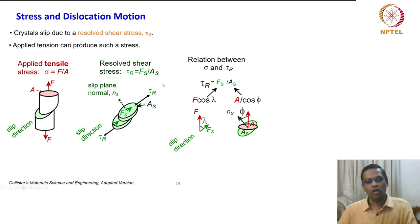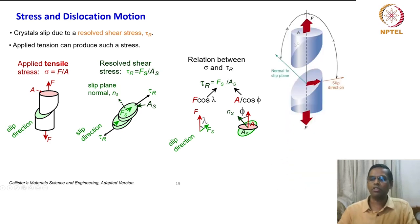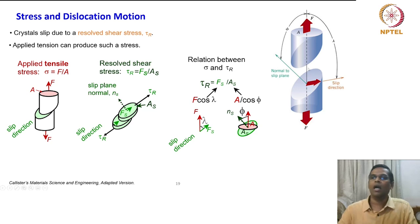Looking at the relation between sigma and tau_r, we can expand: tau_r equals Fs divided by As. To understand what Fs and As are, here is a more detailed schematic — the cylindrical member subjected to slip, the slip plane, slip direction, and the uniaxial tensile force.